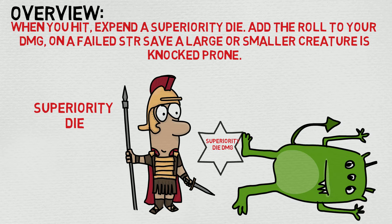This is also super useful if you are an archer. Notice the description doesn't say it has to be a melee weapon attack — it just says a weapon attack. So you could be a fair distance away, use this on your final attack, and knock the target prone while it's surrounded by your melee companions, giving them advantage on all of their immediate attacks.